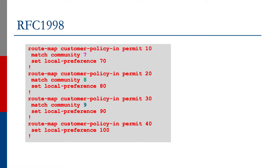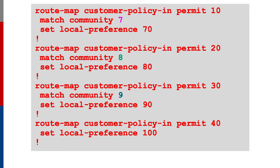This slide shows the route map configuration to match these communities. The first statement matches community list 7, which permits 100:70, and sets local preference to 70. If it matches community list 8, local preference is set to 80. If it matches community list 9, local preference is set to 90. Lastly, anything that doesn't match the above gets a local preference of 100, which is the default. It's good to have this explicitly configured so someone debugging can understand the intent.